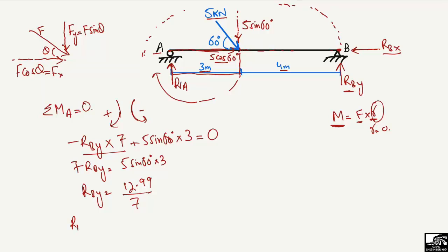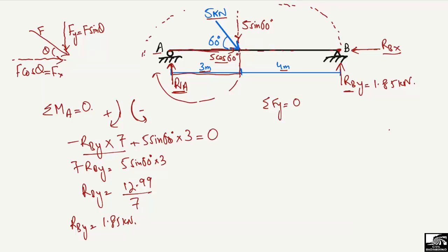Solving for R_BY: R_BY × 7 = 5·sin(60°) × 3 = 12.99. Dividing by 7, R_BY = 1.85 kN. Now for the vertical reaction R_A, we use the equation: summation of vertical forces equal to zero. Upward forces are taken as positive and downward forces as negative.